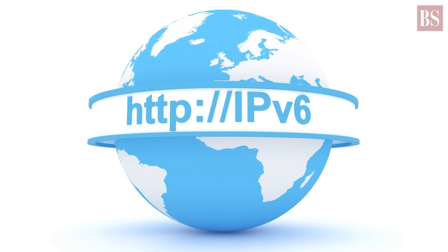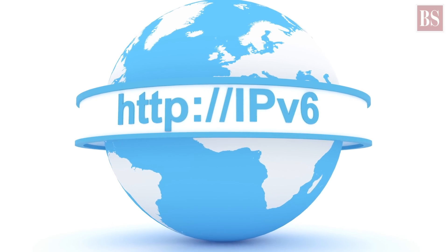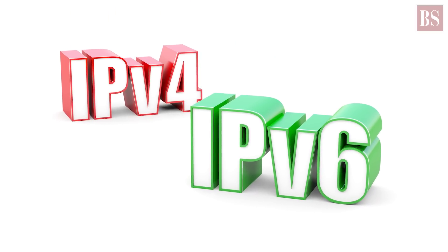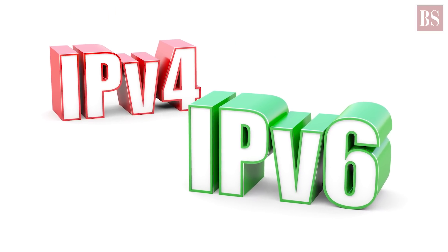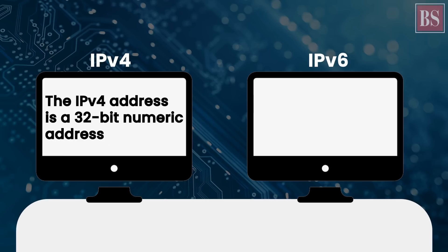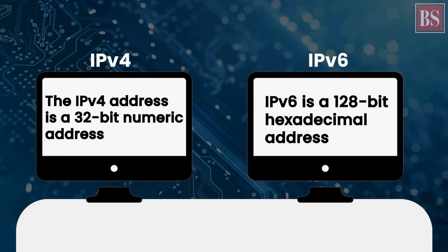So the world is now adopting the sixth version of Internet Protocol. The main difference between IPv4 and IPv6 is the length of the address. The IPv4 address is a 32-bit numeric address, while IPv6 is a 128-bit hexadecimal address.